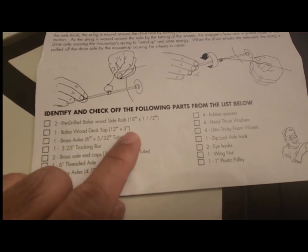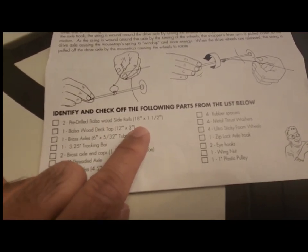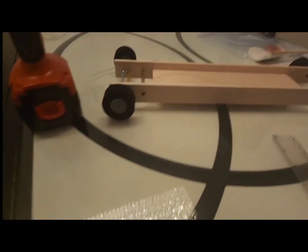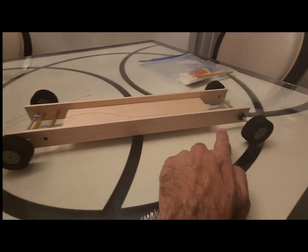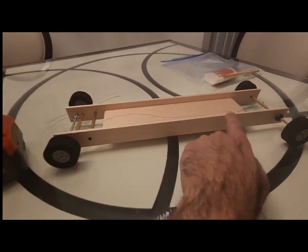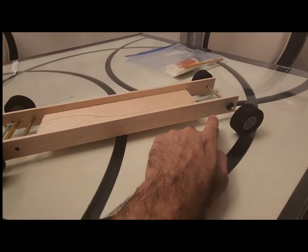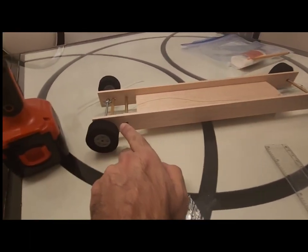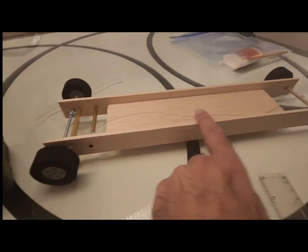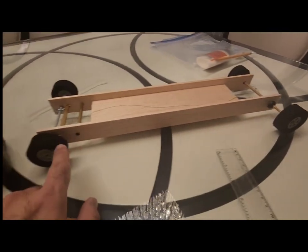These are the pre-drilled side rails - pre-drilled meaning there are holes already here for the axles to go through. You don't have to drill any holes; all the required holes are already drilled and pre-drilled.